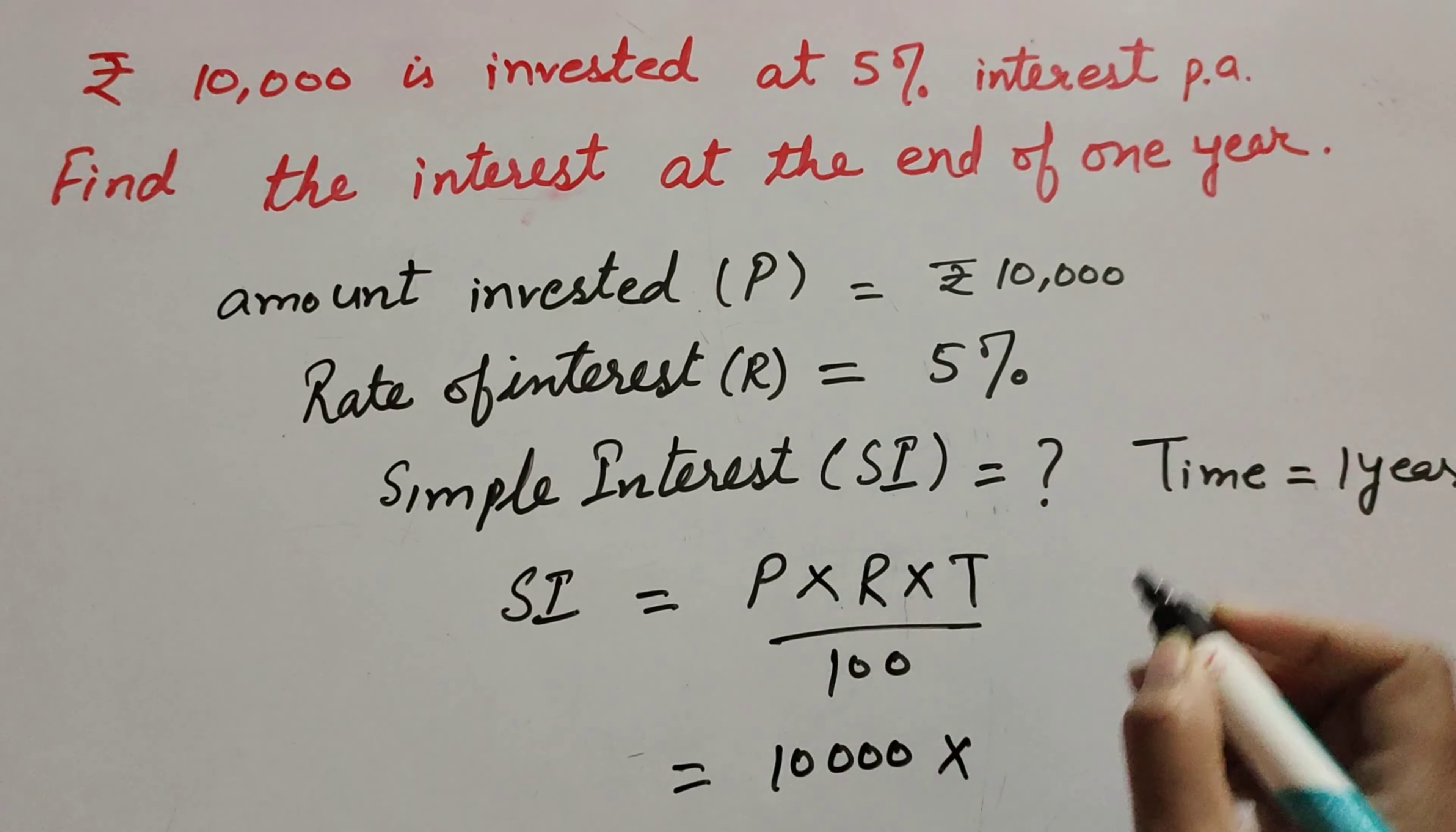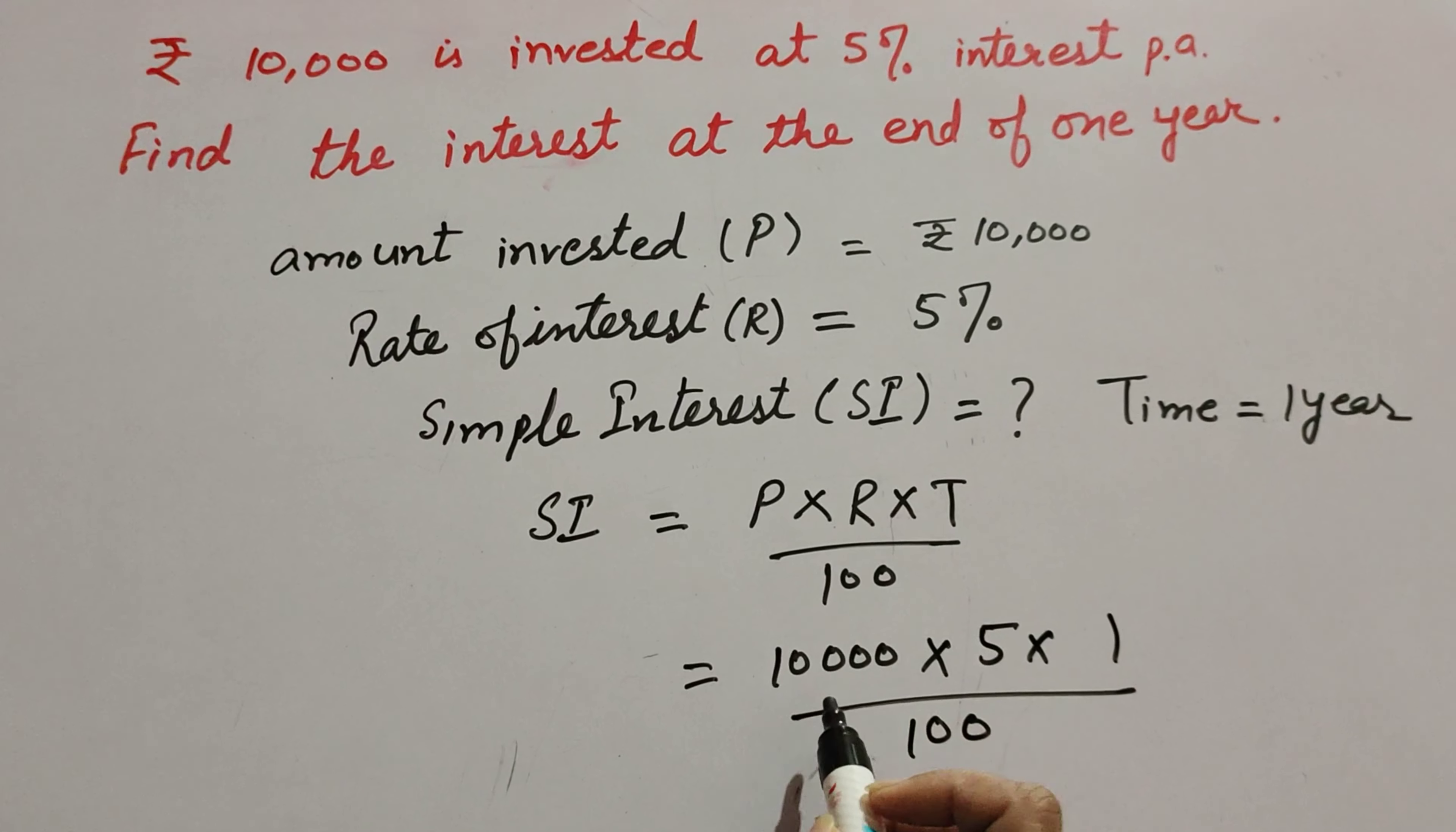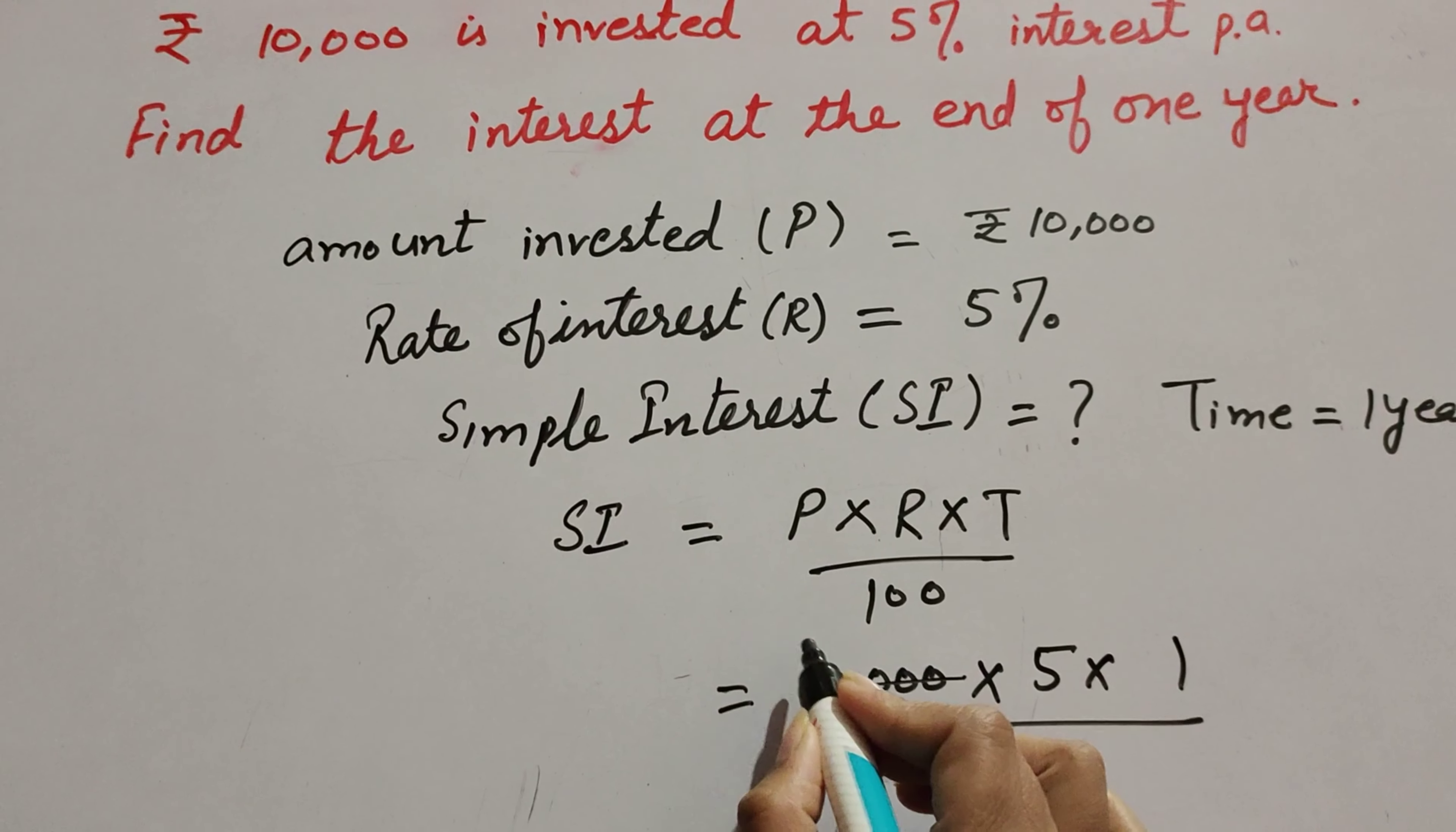Now 10,000 in the numerator and 100 in the denominator both can be cancelled. 100 times 100 equals 10,000, so this simplifies to 100 × 5 × 1.